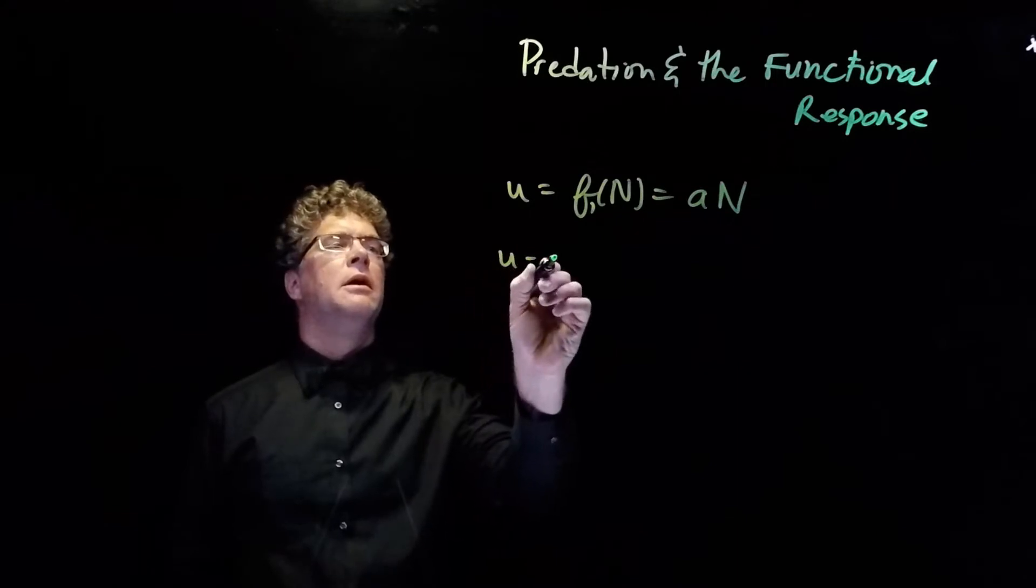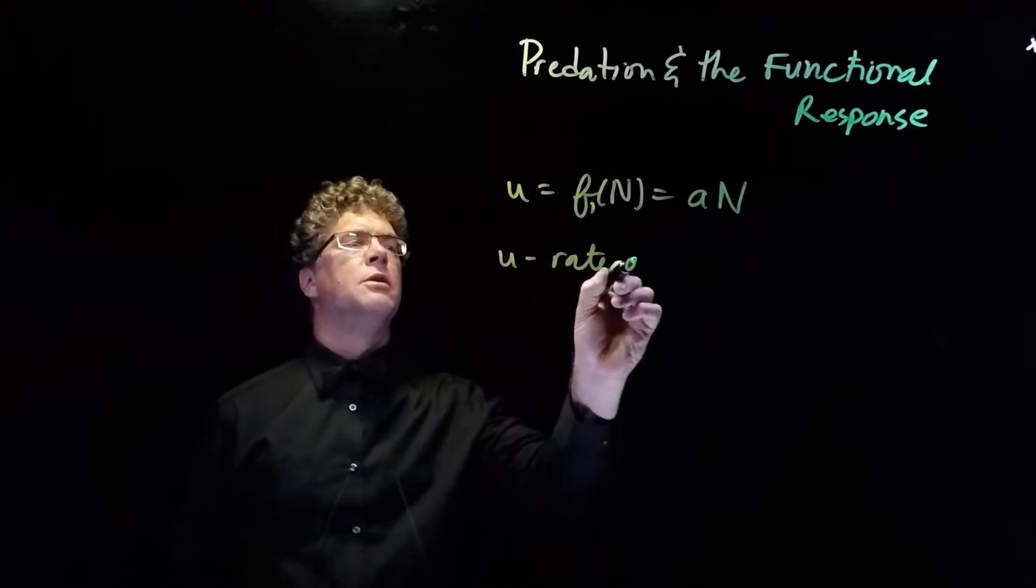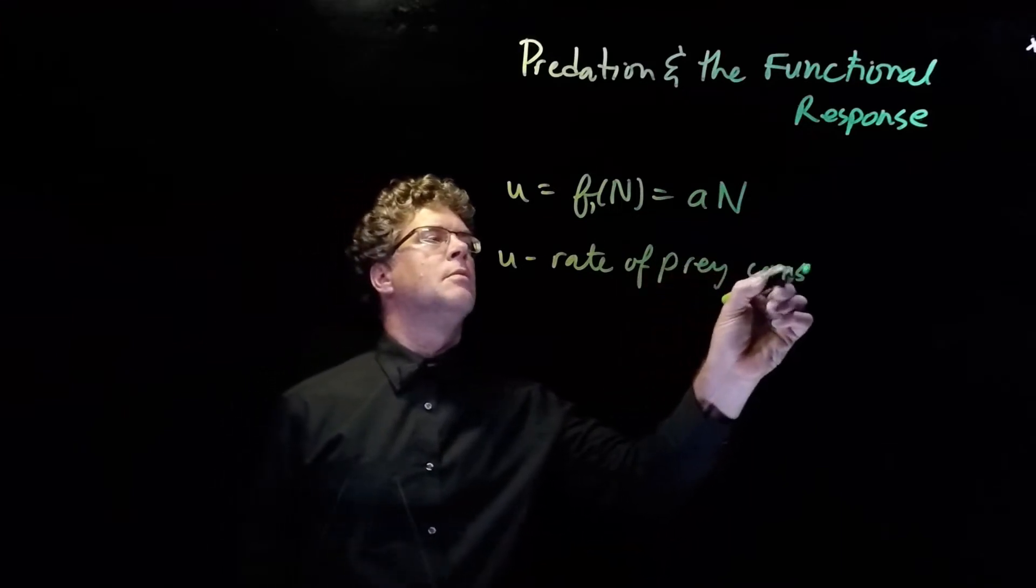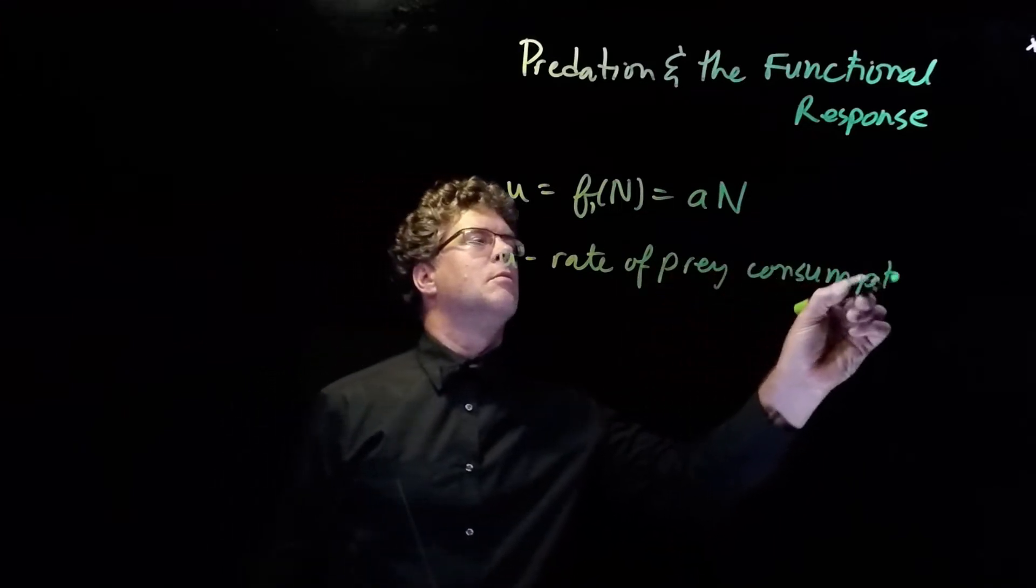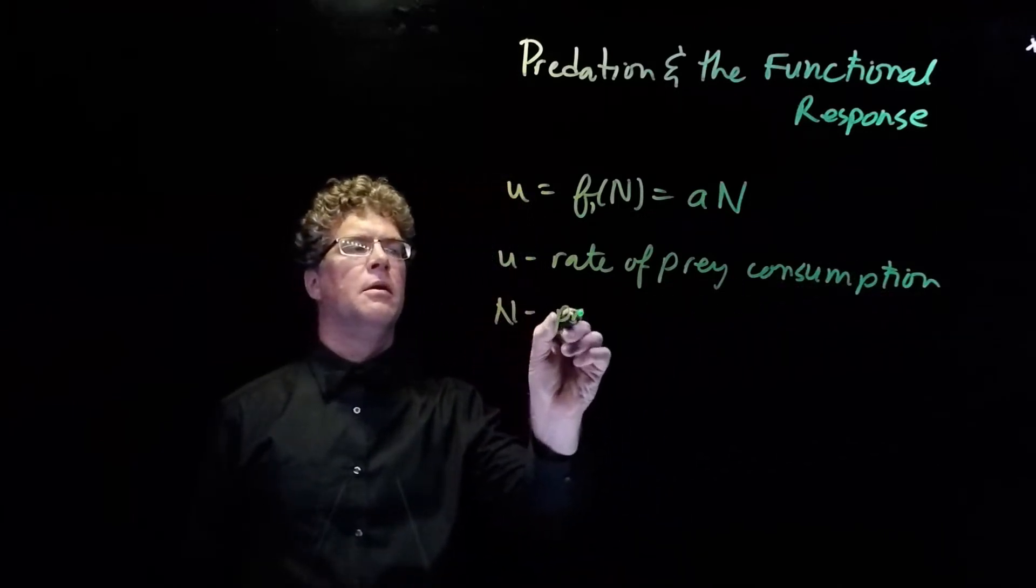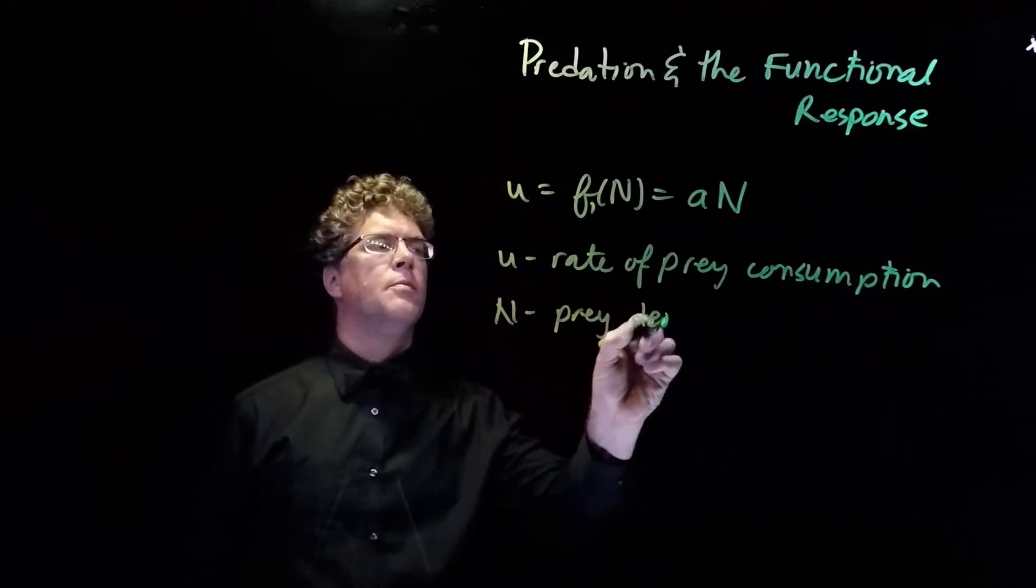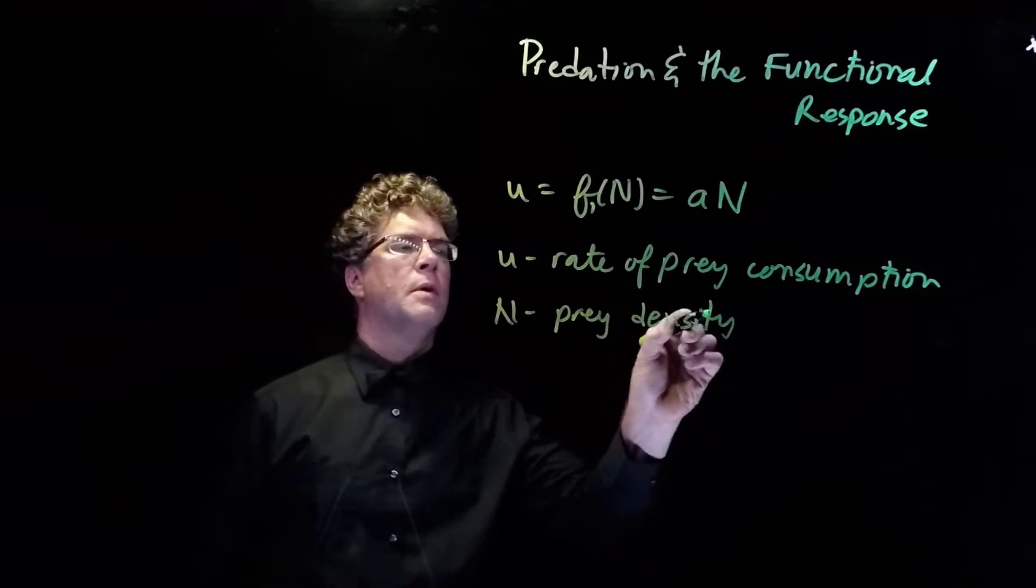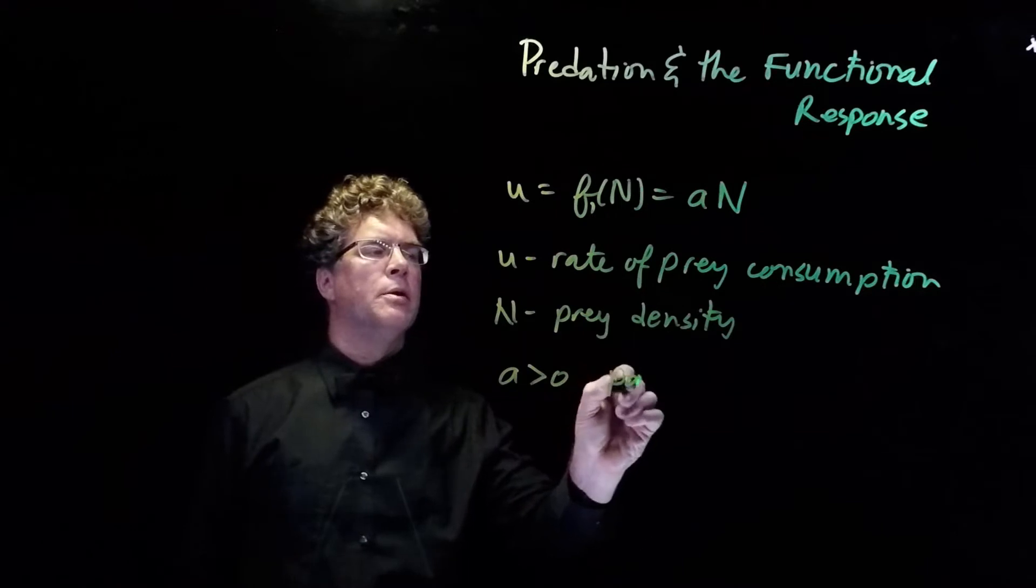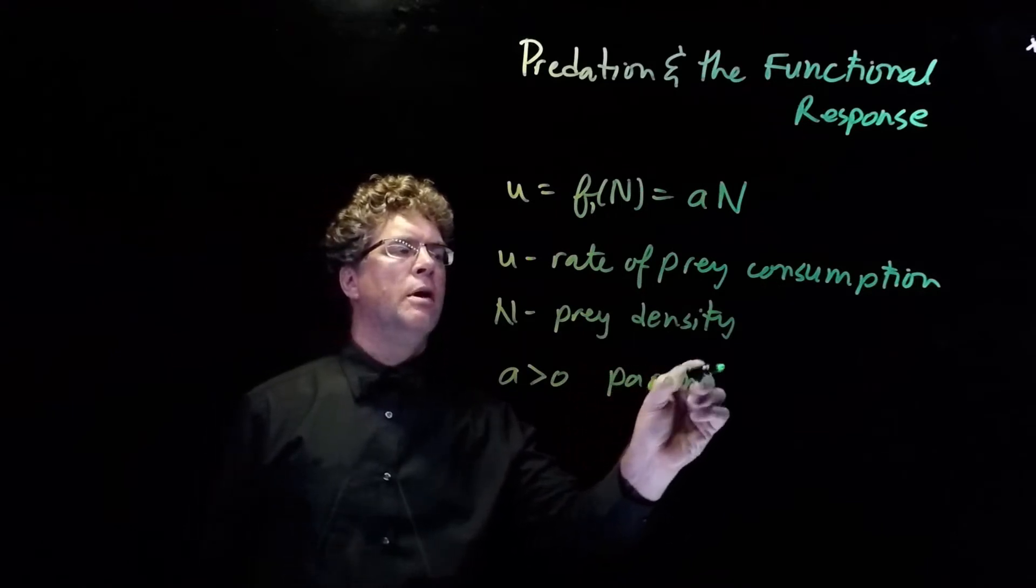Now u is the rate of prey consumption. n is the prey density. And a greater than zero is what we call a parameter. It's a fixed number.